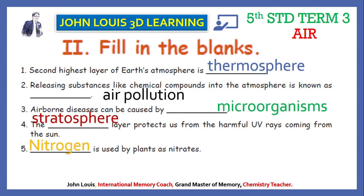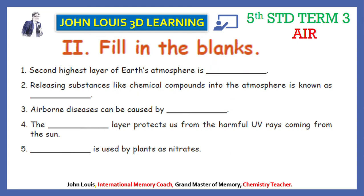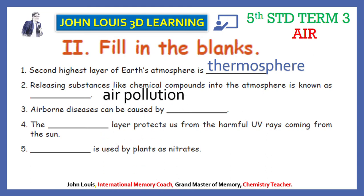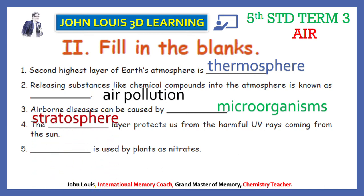Quick recap of fill in the blanks: second highest layer of Earth's atmosphere is thermosphere; releasing substances like chemical compounds into the atmosphere is known as air pollution; airborne diseases can be caused by microorganisms; the stratosphere layer protects us from harmful UV rays coming from the sun; and nitrogen is used by plants as nitrates. Pause the video here to read and learn it thoroughly.